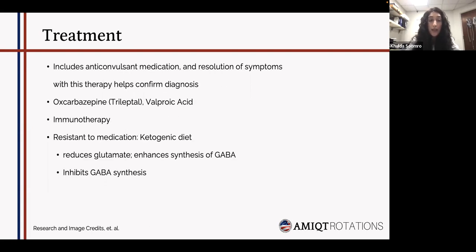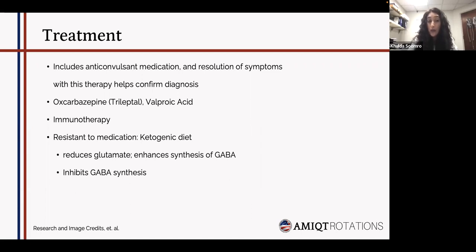The most important treatments include anticonvulsant medication, and resolution of symptoms helps confirm the diagnosis. It is not necessarily the case that anticonvulsant medication will completely eliminate the epilepsy — approximately 60% of seizure disorders are controlled with medication. Medications used include trileptal and valproic acid, and immunotherapy can also be used. In patients resistant to medication, a ketogenic diet is an option — it helps reduce glutamate, the excitatory neurotransmitter, and enhances the synthesis of GABA.